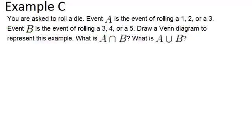Finally, let's look at example C. You are asked to roll a die. Event A is the event of rolling a 1, 2, or 3. Event B is the event of rolling a 3, 4, or 5. Draw a Venn diagram to represent this example.